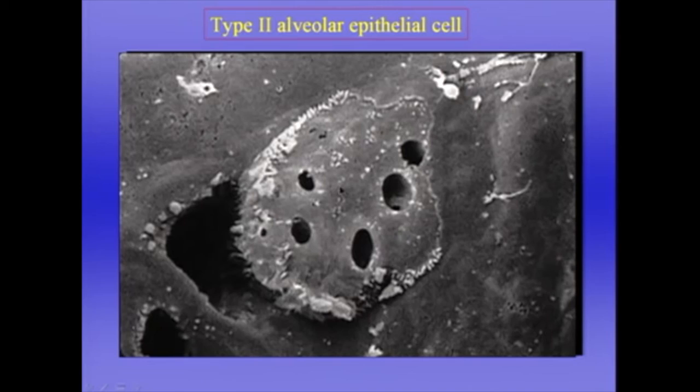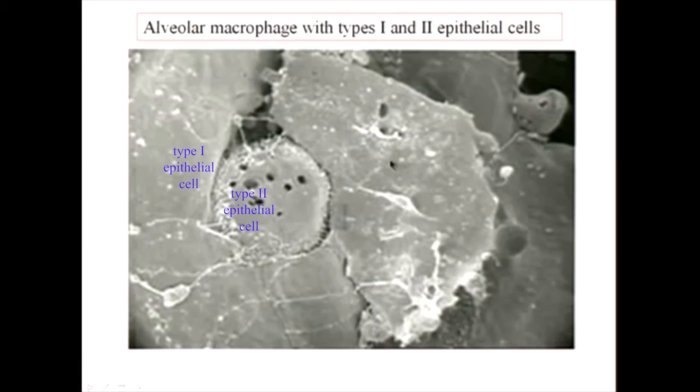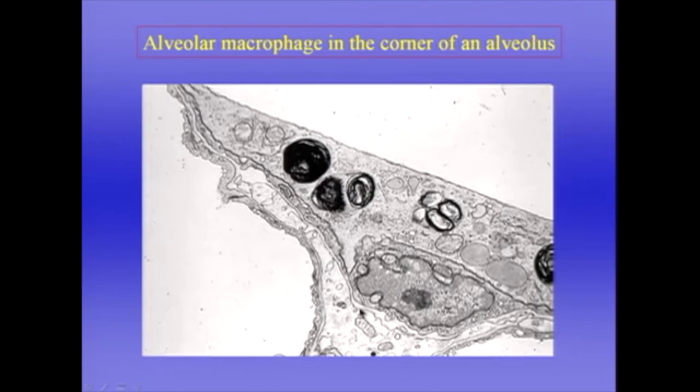This material is surfactant. Another cell we'll see in the alveolus is the alveolar macrophage. Here's a beautiful scanning electron micrograph showing the alveolar macrophage — it's a bit like an amoeba. It moves around the surface of the alveolus by amoeboid activity and can phagocytose and engulf foreign particles. Its job is to keep the alveolar surface clean. Here's the macrophage with its nucleus, lurking in the corner of an alveolus.